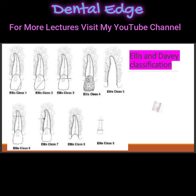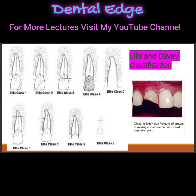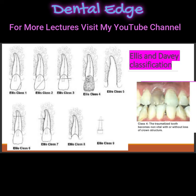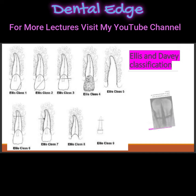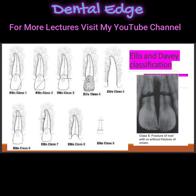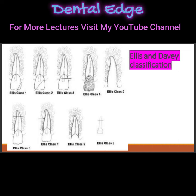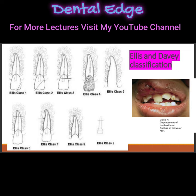Class three is an extensive fracture of the crown involving enamel, dentine, and also the pulp. Class four is when a traumatized tooth becomes non-vital with or without loss of crown structure. Class five is complete loss of the tooth due to trauma. Class six is fracture of the root with or without loss of crown structure.